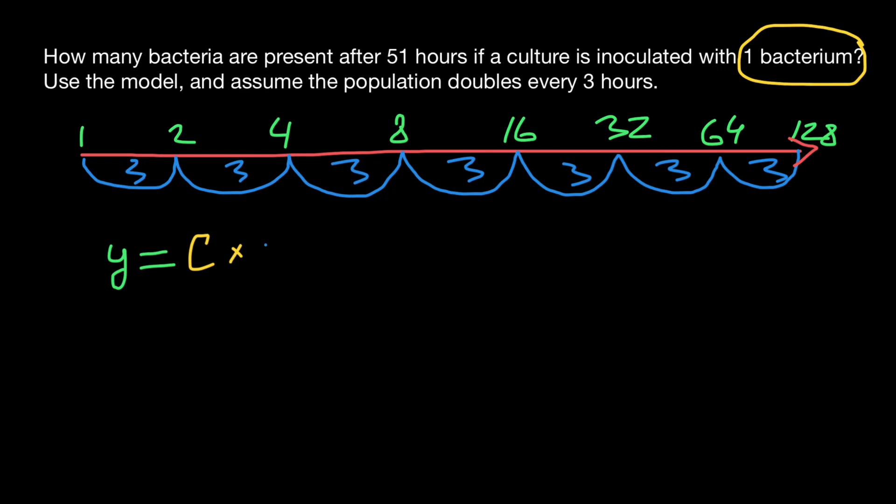Times two, because we are given doubling time. If we were told that it would triple, we would use three instead of two. Two in the power of T. So here's the formula that we are going to use today. And T here stands for the number of doubling cycles. How many such cycles we have?